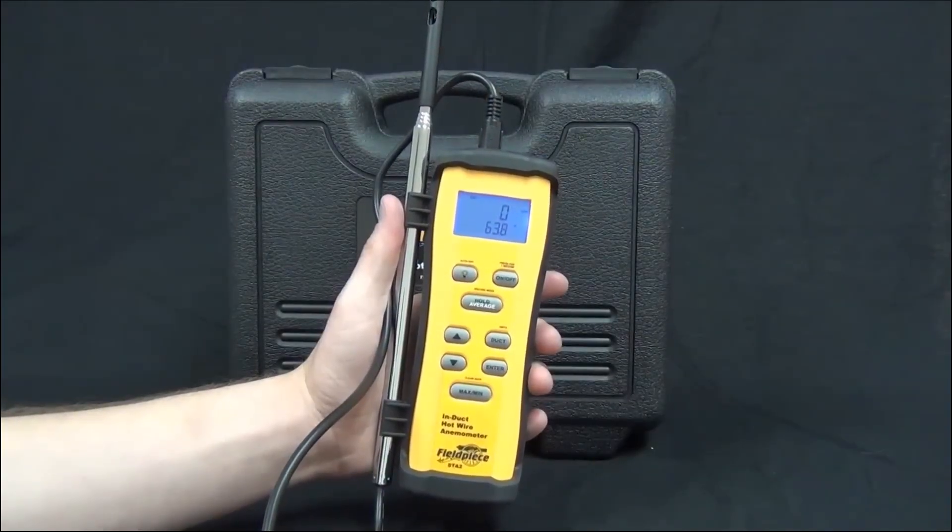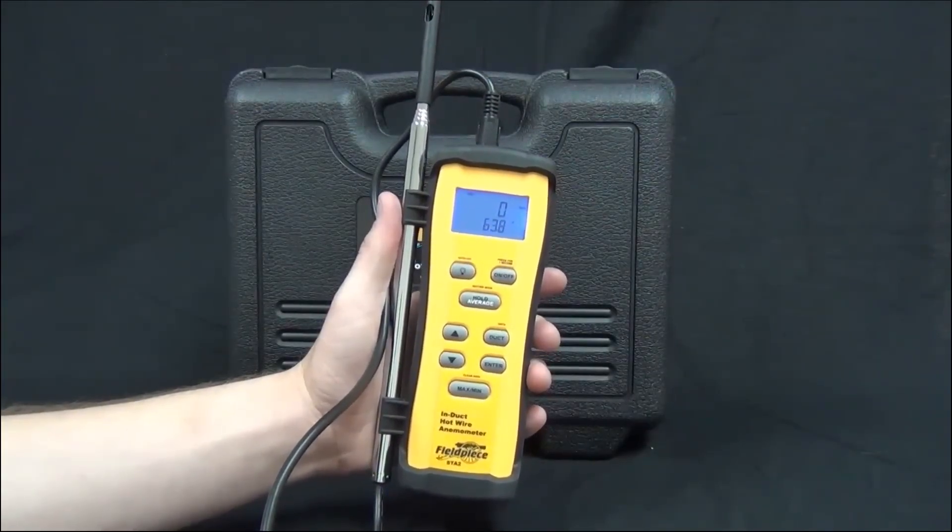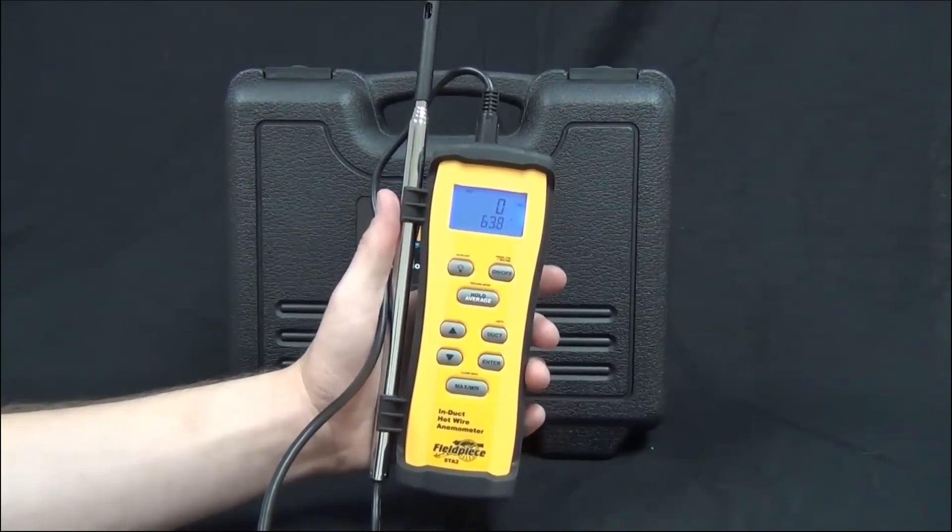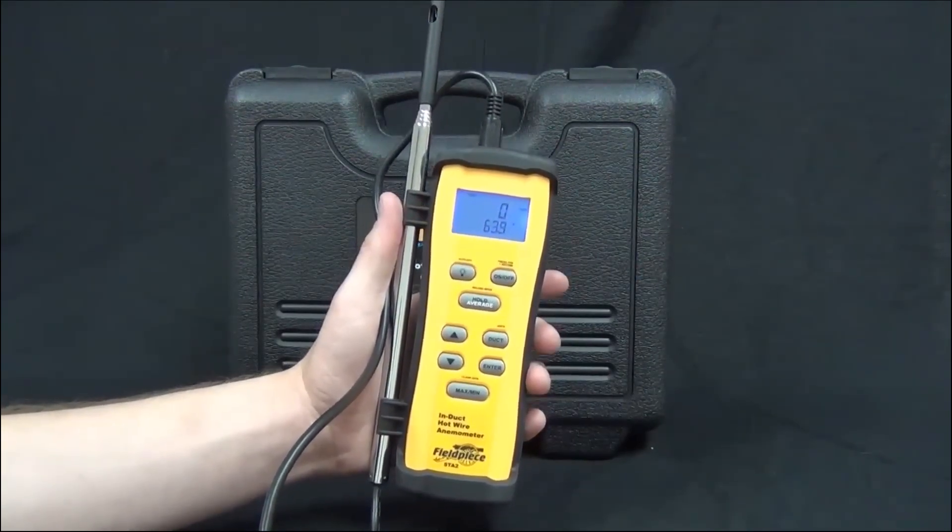Okay, today we're going to talk about FieldPiece's new STA-2. This is an in-duct hot wire anemometer, and what this allows you to do is to get CFM in the duct.